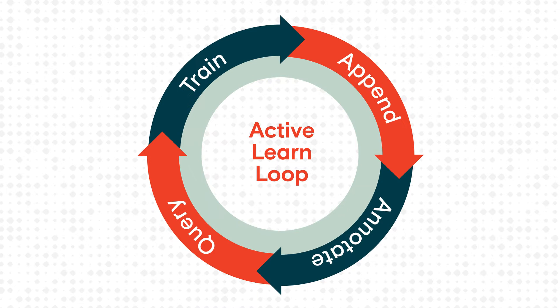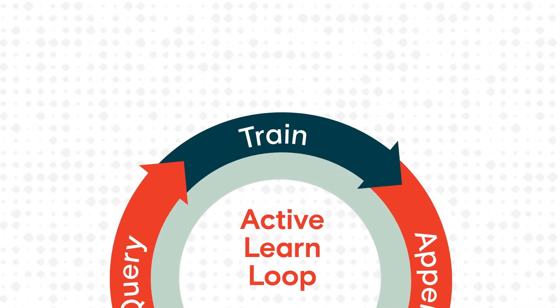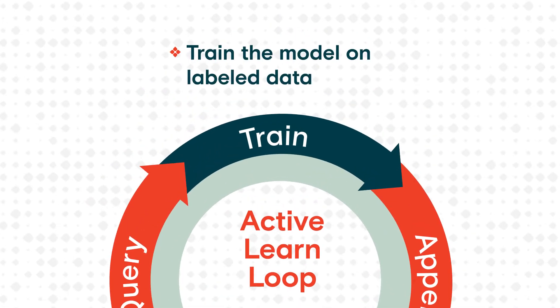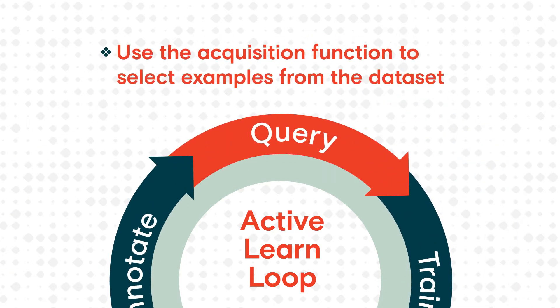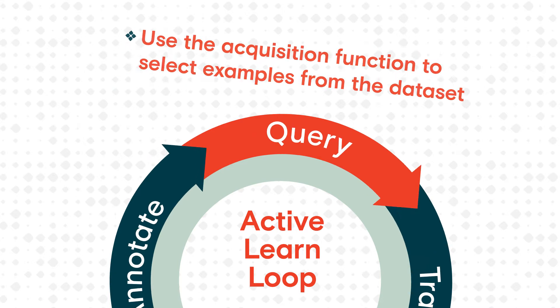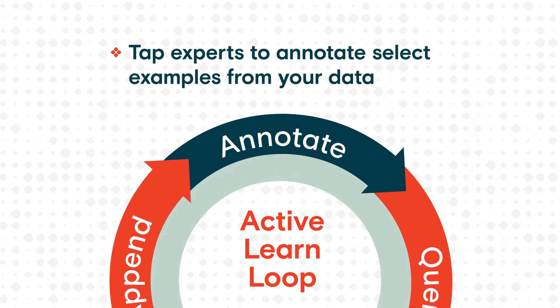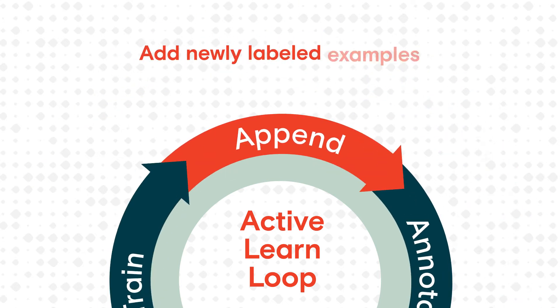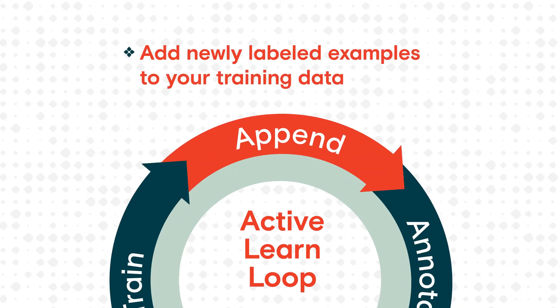Here's how it works. The algorithm processes an initial subset of labeled data and makes predictions. If those predictions don't reach a desired confidence level, the algorithm requests more data. A human labels the requested data and sends it back to the algorithm. This cycle repeats until the model is performing accurately at the right confidence threshold.